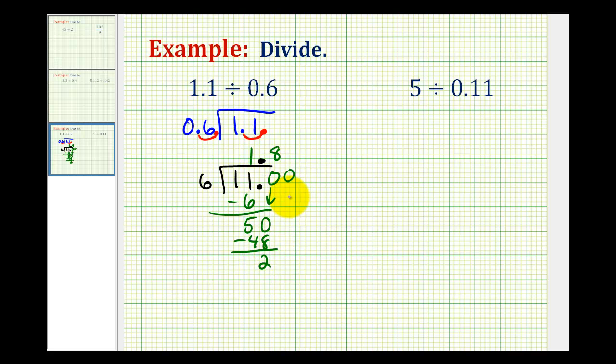We need to add another zero and bring it down. Now we want to determine how many 6's there are in 20. That would be 3. 3 times 6 is 18, and we subtract. This difference is 2, the same as we had before. Add another zero, bring it down. How many 6's in 20? It's still 3. 6 times 3 is 18, and we subtract. Notice how we get a difference of 2 again. So if we added another zero, this would be 20 again, resulting in another 3. So the 3 is repeating.